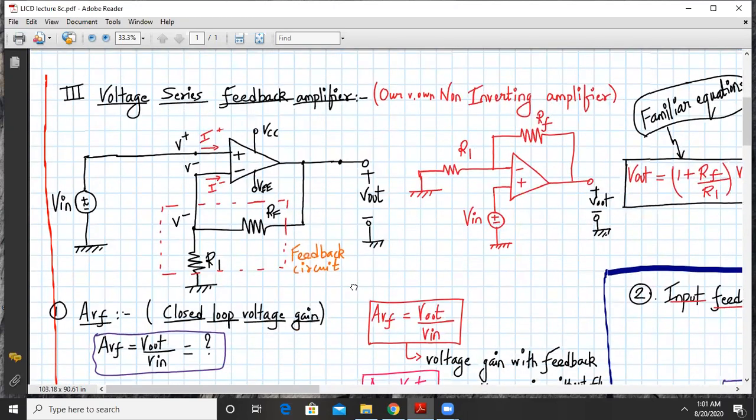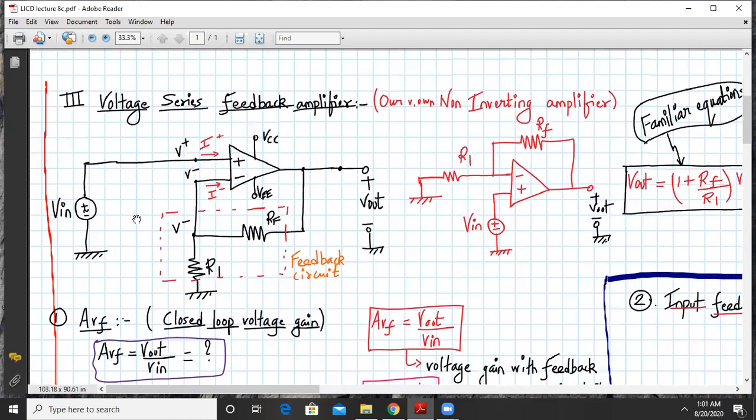Now let us concentrate on this diagram. It is a non-inverting amplifier basically. My input is connected to the non-inverting terminal and this is my feedback network shown by the dotted box, consisting of resistors R1 and RF. We need to find the closed loop voltage gain, that is AVF.